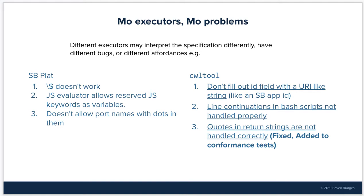On the Seven Bridges side, there is a bug where the backslash dollar escape does not work. This works in CWL tool as the specification allows. On Seven Bridges platform, the JavaScript evaluator allows reserved JavaScript keywords, such as argument, as variables. CWL tool does not allow this.